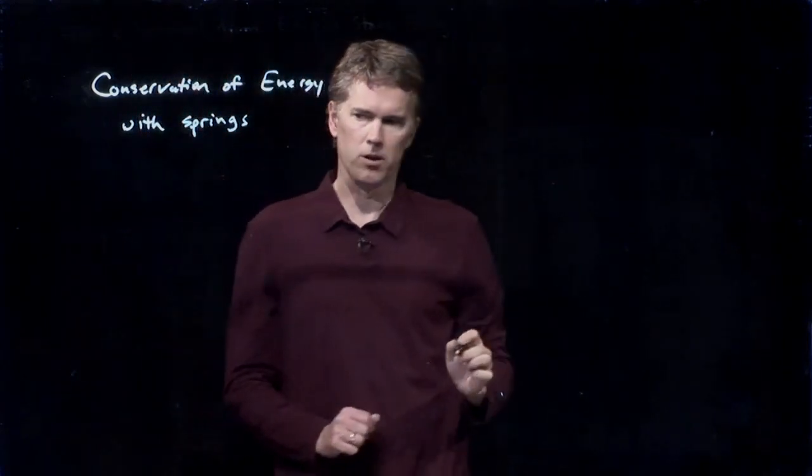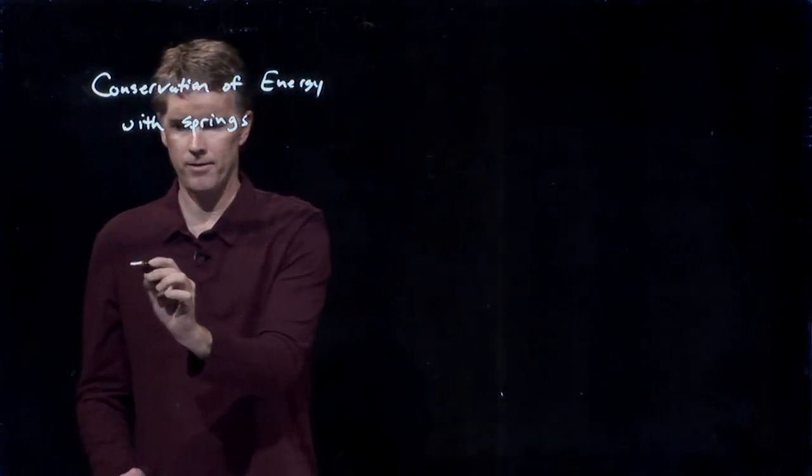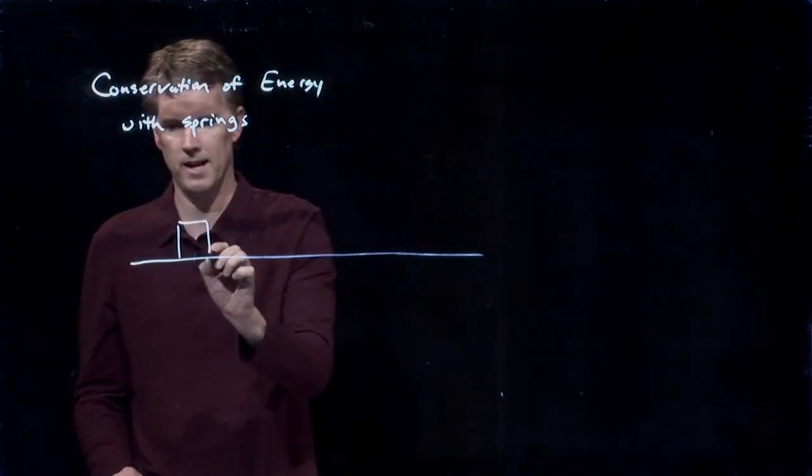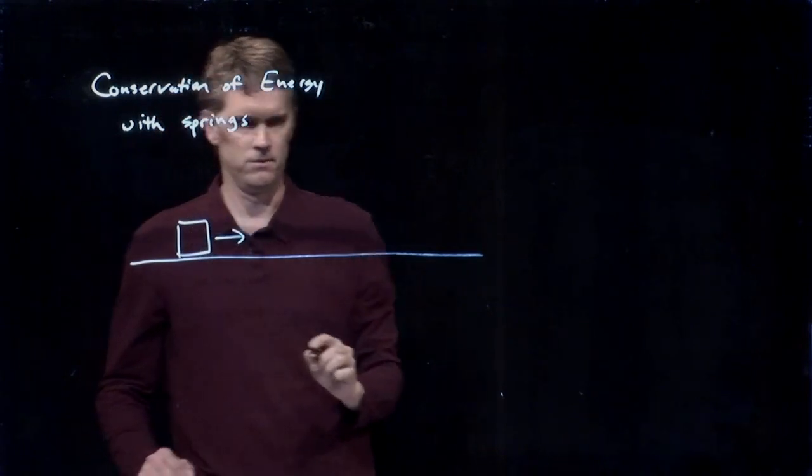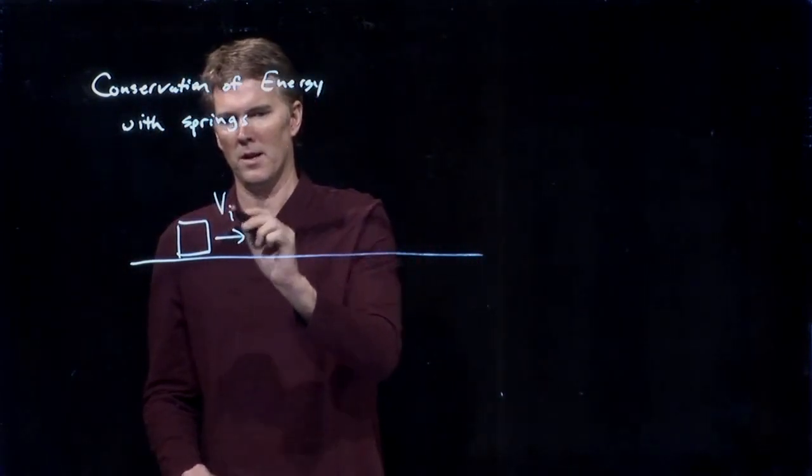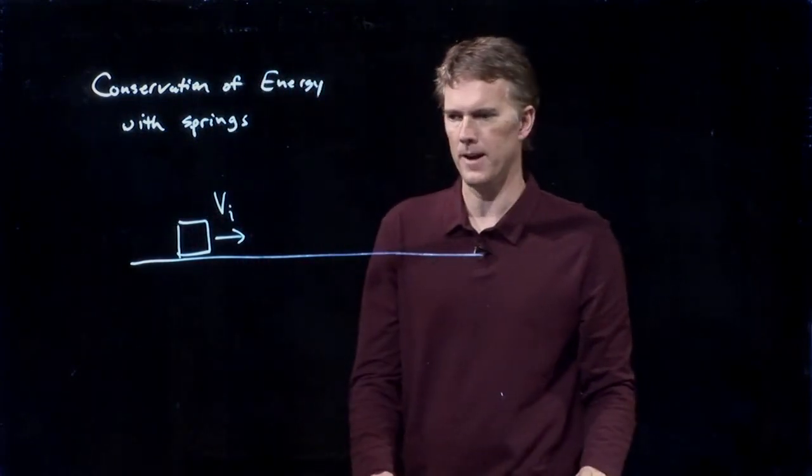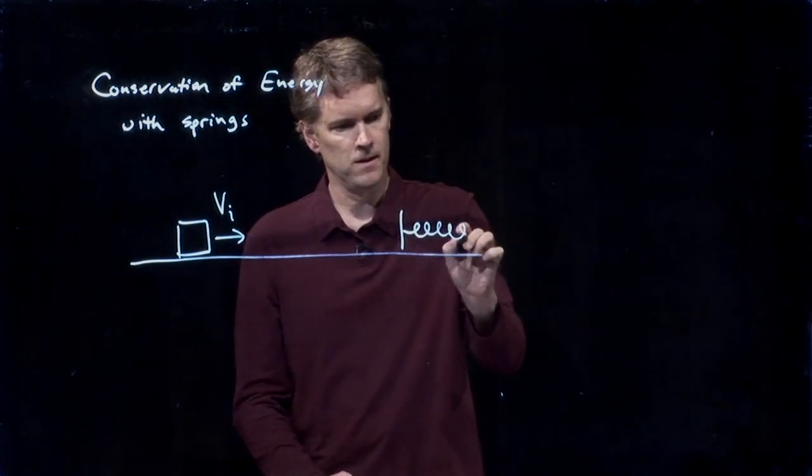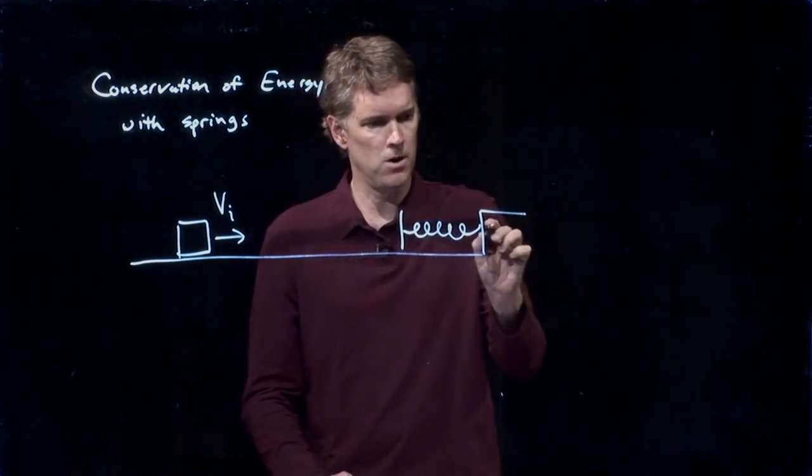And so let's do the following problem. Let's say we have an object that is sliding along a frictionless surface with some initial speed v sub i. And then it's going to hit a spring that is attached to the wall.